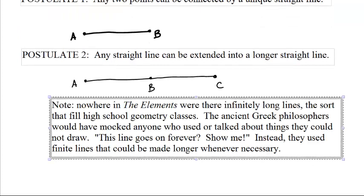Now note, nowhere in The Elements were there infinitely long lines, the sort that fill high school geometry classes. One of the very first things in a geometry class is they show you this line with arrows on either end and say this is an infinitely long line, it goes forever both directions. The ancient Greek philosophers would have mocked anyone who used or talked about things they could not draw. This line goes on forever? Show me. You don't know what forever is? They would have ridiculed that.